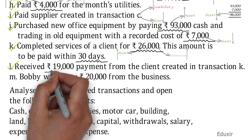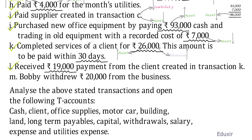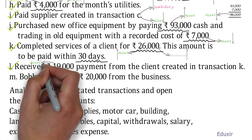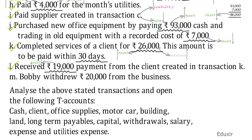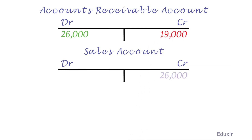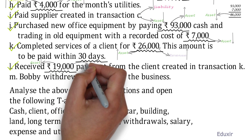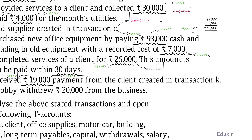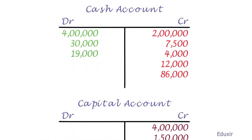Let us now deal with transaction L. The client has paid 19,000. Till this point, the amount to be received was in the form of accounts receivable. When part of this amount is received, it decreases accounts receivable — the asset is getting converted from accounts receivable to cash. To represent this, we decrease the accounts receivable asset and increase the cash asset. We credit the accounts receivable account with 19,000, and debit 19,000 rupees to the cash account. That covers transaction L.